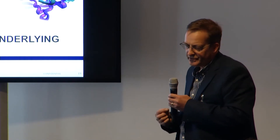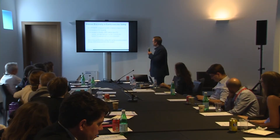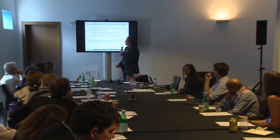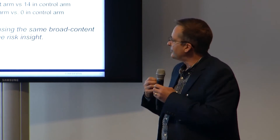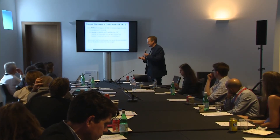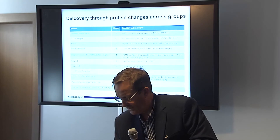I'm going to switch now to how we can use the same platform to uncover underlying disease biology. The Illuminate study was stopped after 18 months because of the increase in cardiovascular events, but also because of other non-cardiovascular disease: 24 people in the treatment arm versus 14 in the control arm succumbed to cancer, and 9 succumbed to sepsis. Can we use the broad capacity of this technology to uncover what's going on? I know this is a drug-induced disease, but the processes we go through are similar to what we might use to uncover novel disease biology.